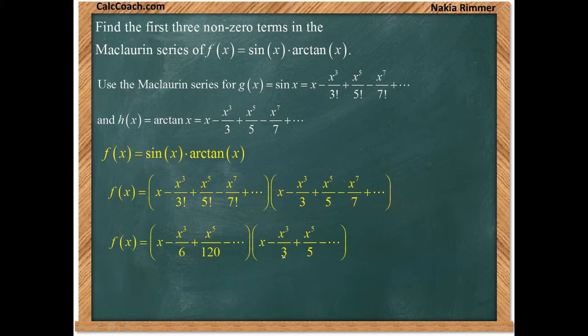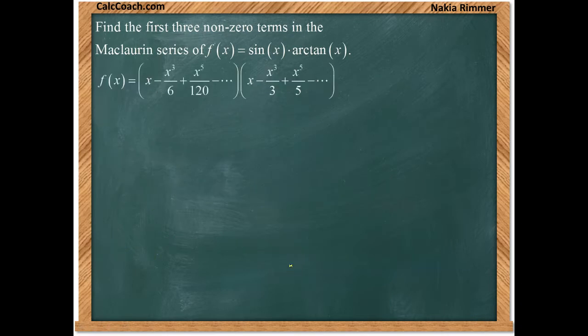Let's go to the next slide and foil this out. All righty. So we'll multiply x by x, by minus x cubed over three, and by x to the fifth over five. And it's just going to bump the power of each of those up by one. There's more terms, but let's just say hopefully that the first three non-zero ones will be enough.